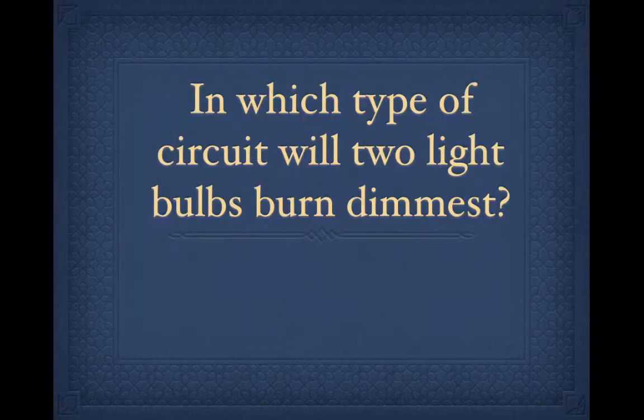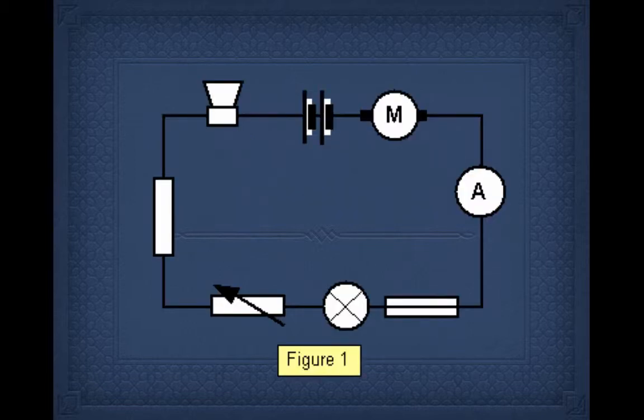Which type of circuit will the two light bulbs be the dimmest? Less current, dimmer light bulbs, series circuit. And another series circuit, big circle.